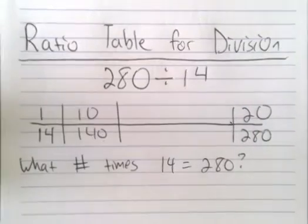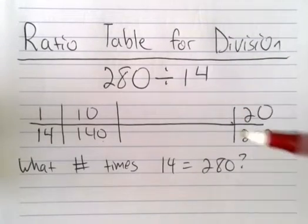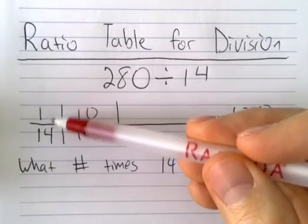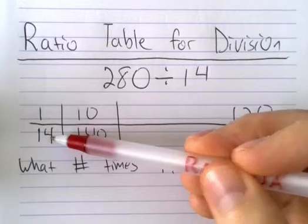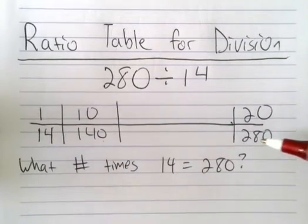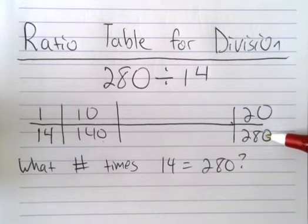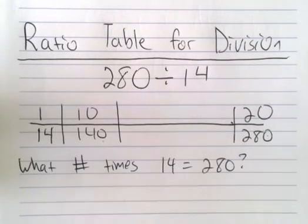So that was an easy example. Basically, you want to just remember when you're setting up a ratio table for division, start off with one times the number, and then whatever number you're dividing. So 280 divided by 14, make sure you put the 280 on the bottom and not on the top, otherwise you'd be multiplying.